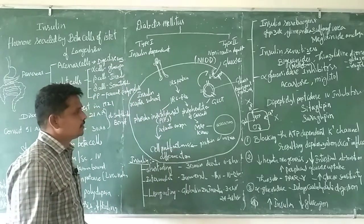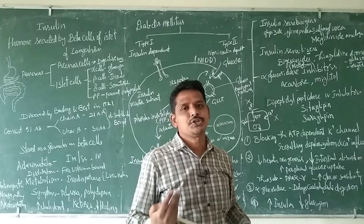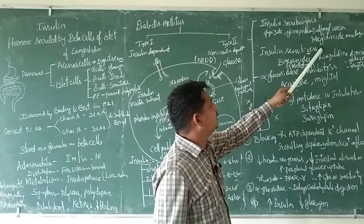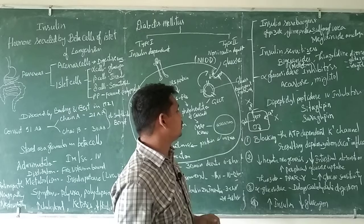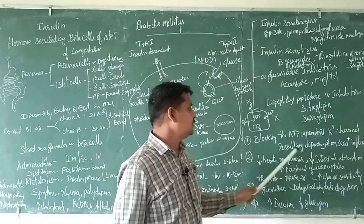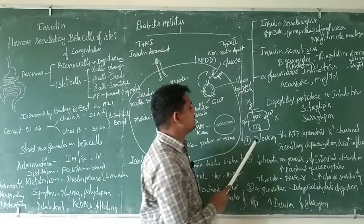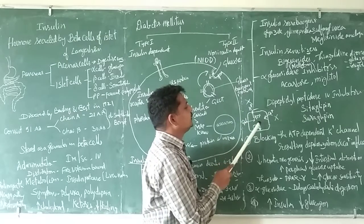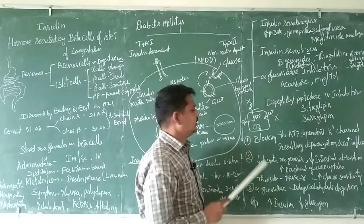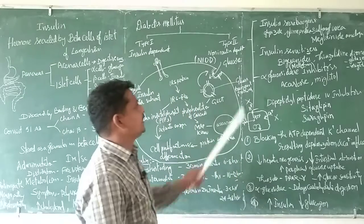Looking at drugs for type 2 diabetes mellitus: first are insulin secretagogues — agents which increase the secretion of insulin. Glipizide and glimepiride, which are sulfonylureas, and meglitinide analogues are used for this. Their mechanism involves blocking the ATP-dependent potassium channel, resulting in depolarization and calcium influx. This calcium influx causes the insulin-containing granules to be secreted, releasing insulin.